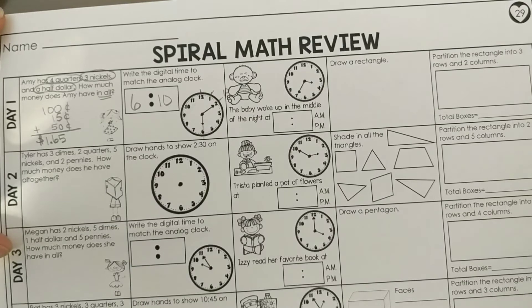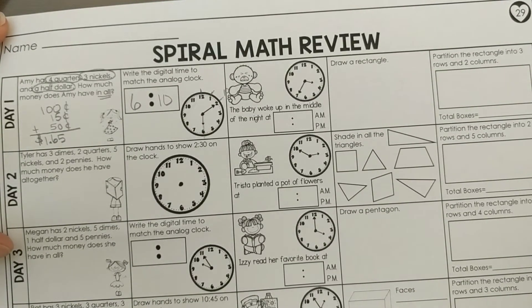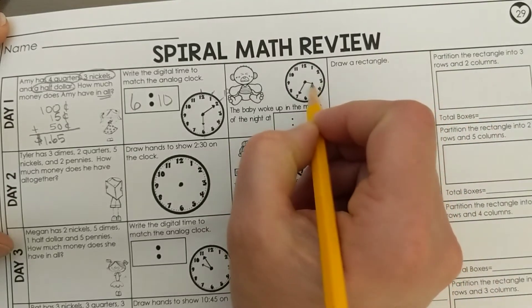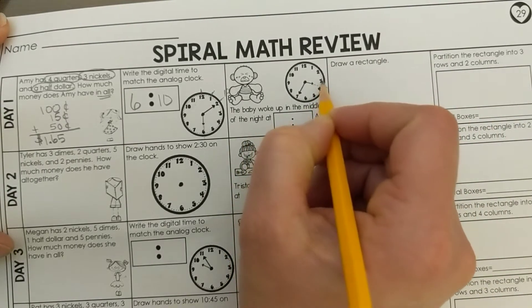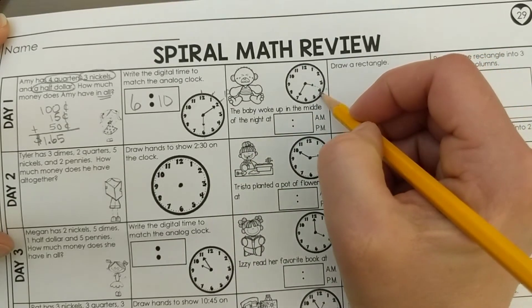The baby woke up in the middle of the night. At what time? The hour hand is in between the 3 and the 4. That means it's already past 3 o'clock, but it is not 4 o'clock yet.